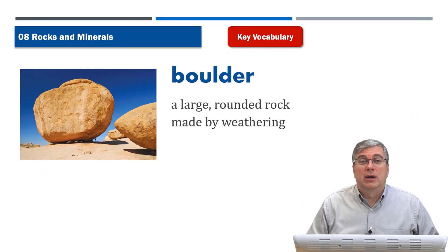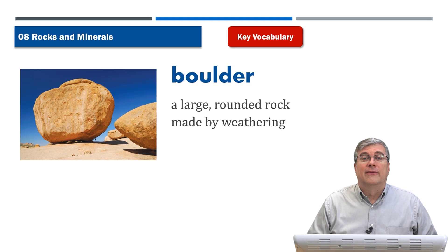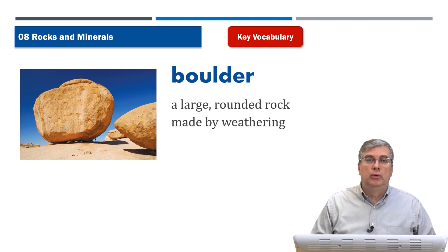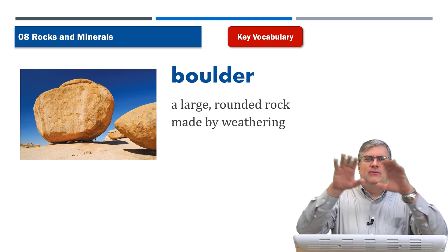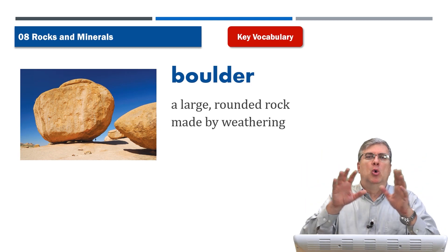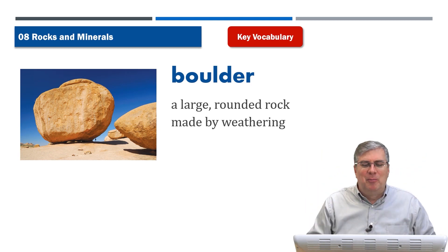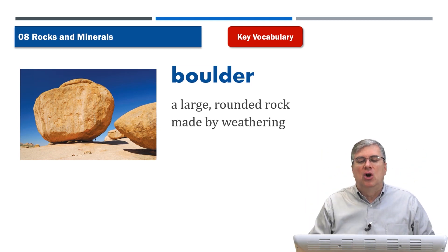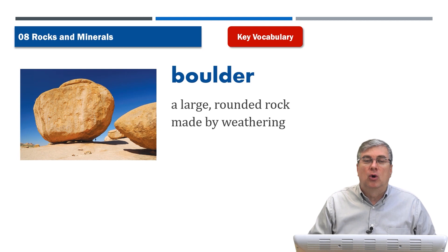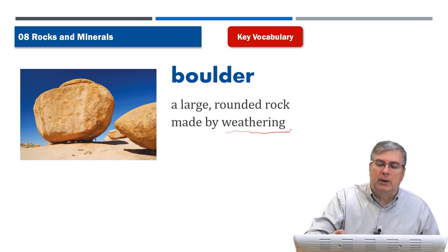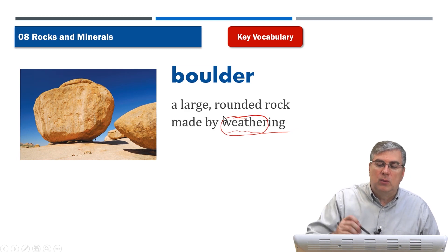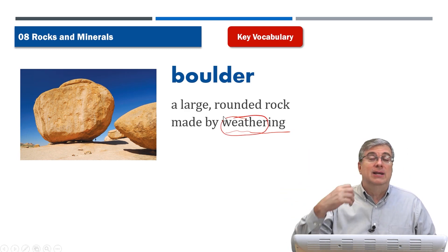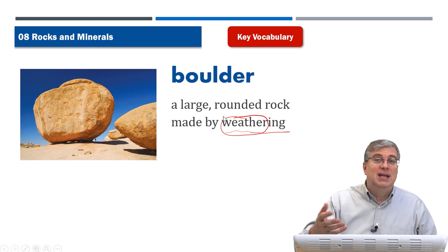In our vocabulary list, the first word is 'boulder.' When you say this word, you feel like something big and round. A boulder is of course a large rounded rock made by weathering. Weathering comes from the word 'weather' — like rain or sun.